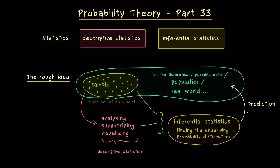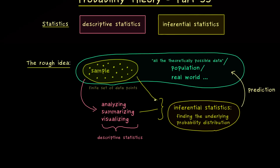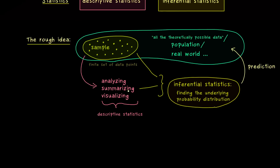And at this point you should see that the probability theory comes in again, because such a prediction should have a probability. This makes sense, because we don't have the full information — everything we predict should be quantified by a probability. However, different approaches could be possible and this is definitely something we will talk about in later videos.